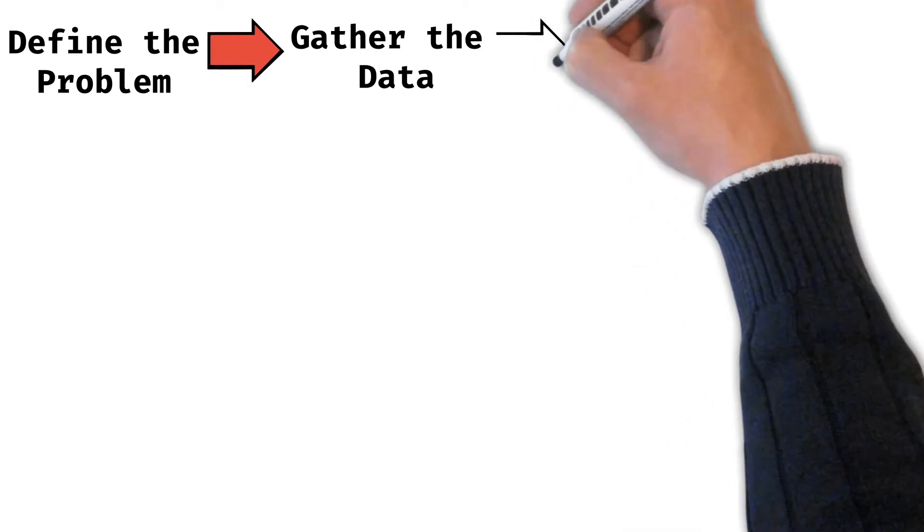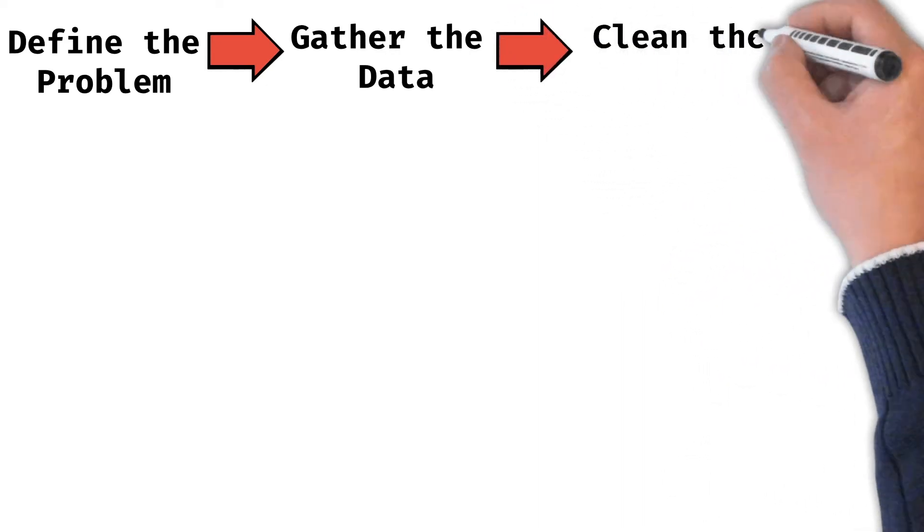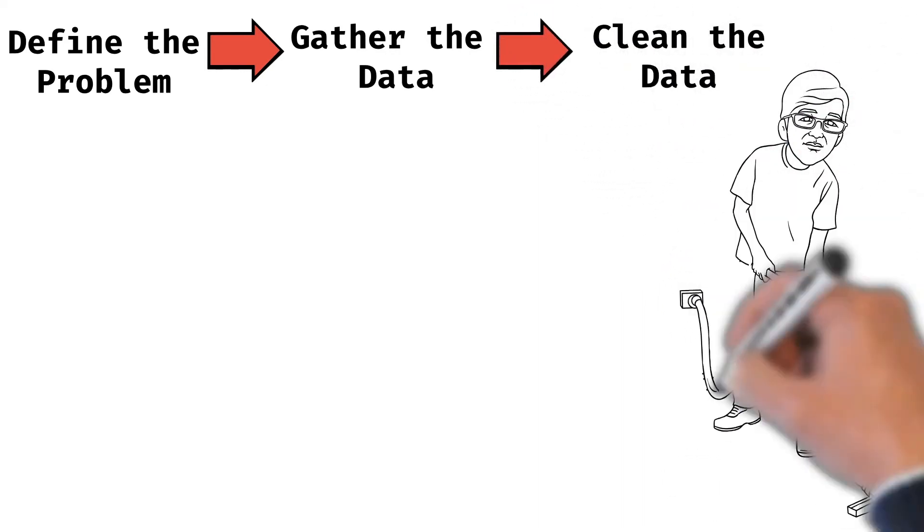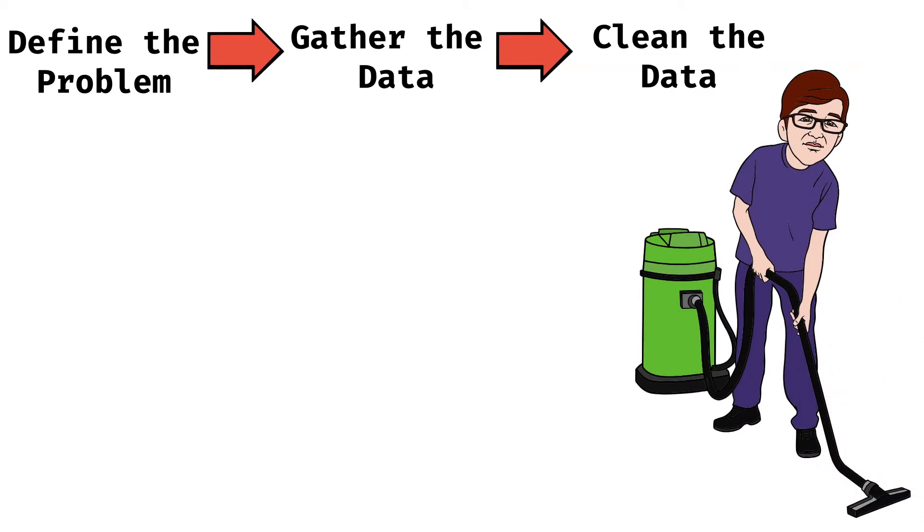Once we have gathered the data, we need to clean the data. Now, the data that we gather will not always be complete as we may expect. There will be a lot of missing information. There will be a lot of information that may be inappropriate, like we may find some data which has been typed wrongly and thus is represented wrongly. So we need to clean the data. After cleaning the data, we will find that we may have some data which is still missing and we may want to still retain it, and we may have to apply techniques like replacing some missing data with some values. So all these steps have to go into cleaning the data.